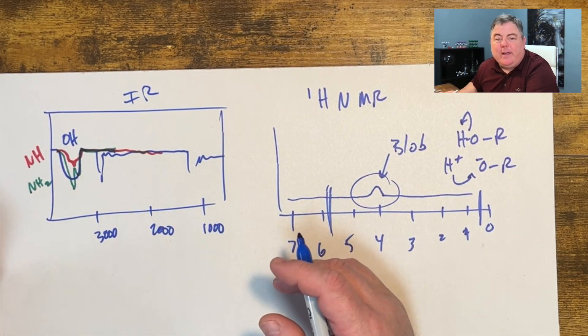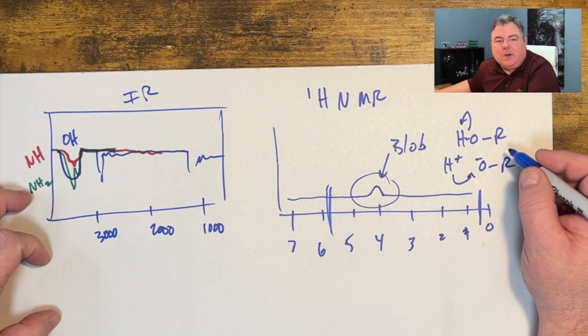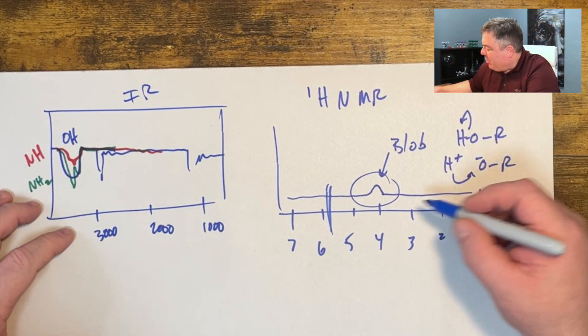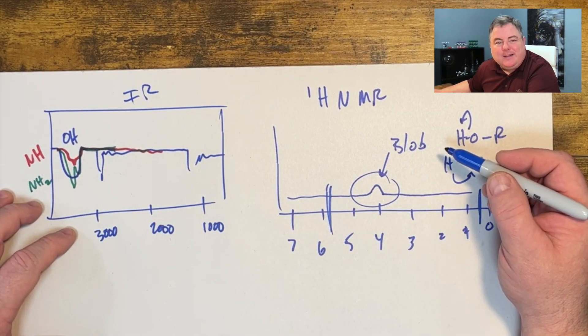It doesn't always look that way. Sometimes the hydrogen sticks on long enough that it'll be split into a doublet or triplet, but often it's the blobby looking peak inside of your spectrum.